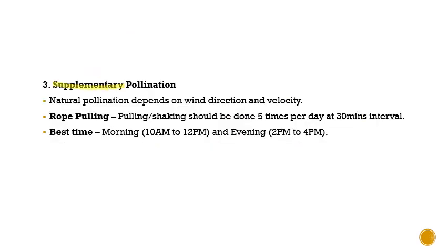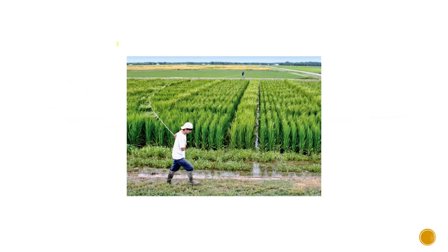The third advance is supplementary pollination. In rice, natural pollination depends on wind direction and velocity, but we cannot fully depend on these environment-dependent parameters. So we need to interfere and enhance the pollination percentage. The most successful approach is row pulling — pulling and shaking of the row should be done 5 times per day at 10-minute intervals. The best time is in the morning from 10 a.m. to 12 p.m. and in the evening from 2 p.m. to 4 p.m.